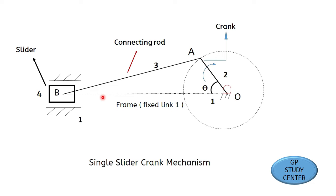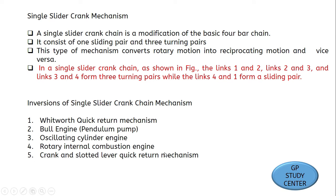In single slider crank chain there are three turning pairs and one sliding pair. The inversions of single slider crank chain mechanism are: the Whitworth quick-return mechanism, bull engine, oscillating cylinder engine, rotary internal combustion engine, and crank and slotted lever quick-return mechanism. The first mechanism we will study is the Whitworth quick-return mechanism.